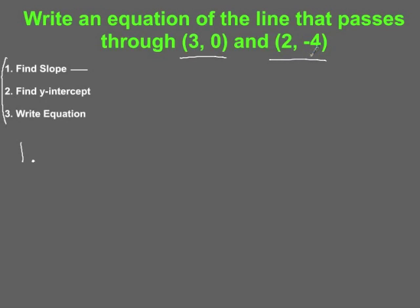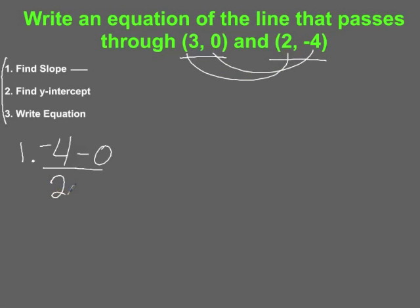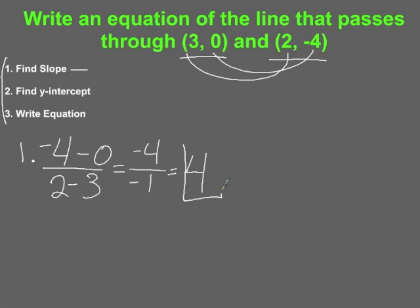So y2 minus y1 is negative 4 minus 0, and x2 minus x1 is 2 minus 3, to find the slope between those two points. Negative 4 minus 0 is negative 4, and 2 minus 3 is negative 1. A negative divided by a negative is positive, and 4 divided by 1 is 4. So our slope is positive 4.